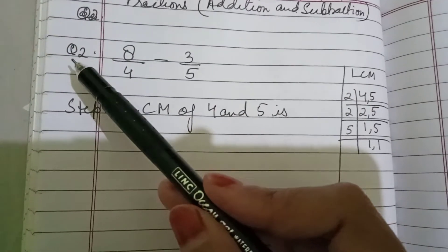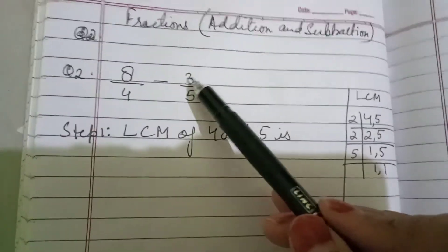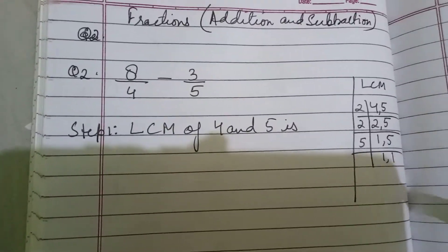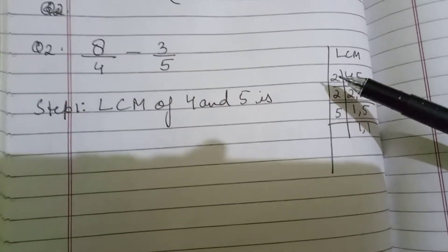That is 8 upon 4 minus 3 upon 5. So, remember first two steps are same. Then, whatever the changes will be in the third step. We will see that also.